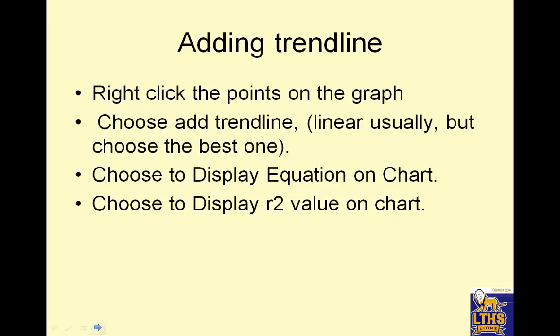Add a trend line. Right-click on the points on the graph. Choose add trend line. And usually it's going to be linear, but you choose whatever the best one is. And choose display equation on the chart. And choose to display the R squared value. That's squared, not two. Sorry about that. On the chart.